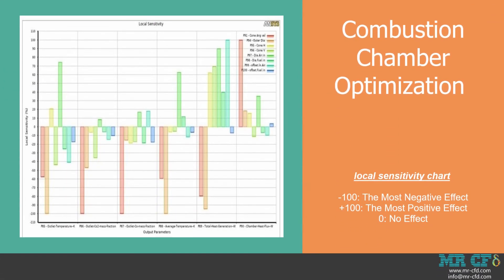By viewing the local sensitivity chart, you can understand which input parameters affect the output the most. The effect of each parameter on the output is explained through assigning a value between minus 100 to plus 100. The value of minus 100 indicates the most negative effect while the value of plus 100 shows the most positive effect and of course, the value of zero indicates no effect. For instance, in this project, you can easily say that the combustion chamber's cone angular velocity and outer diameter play a distinct role almost over all output parameters.